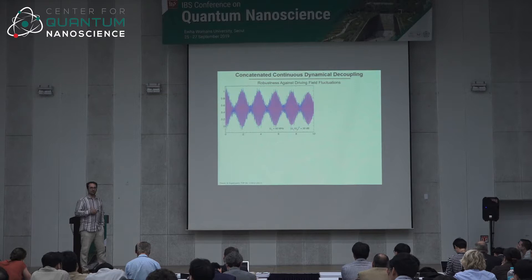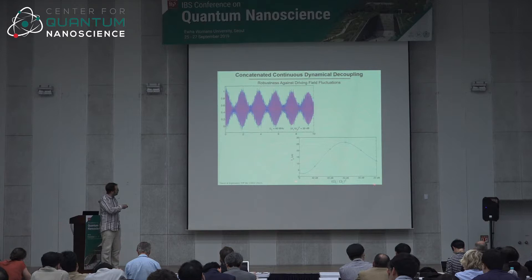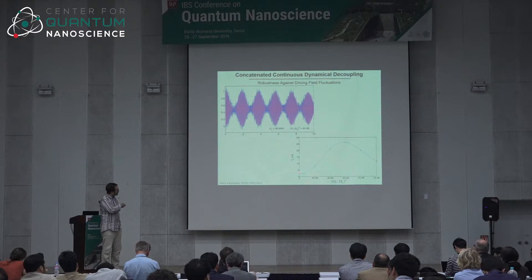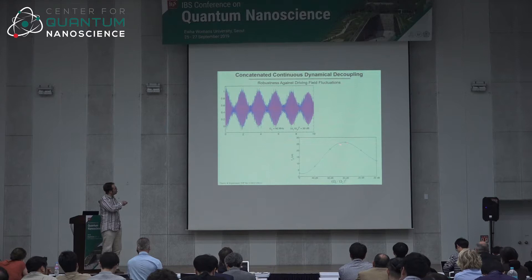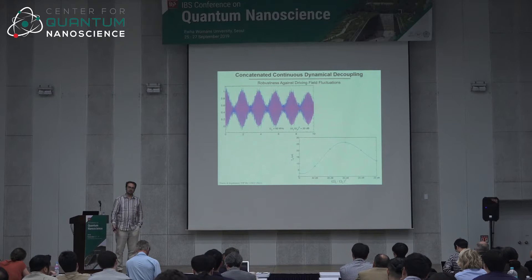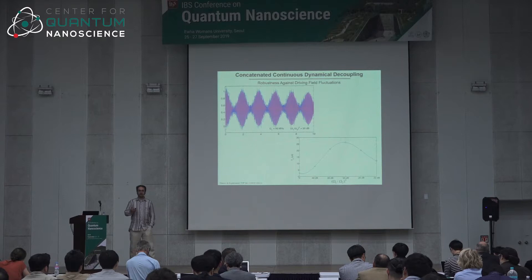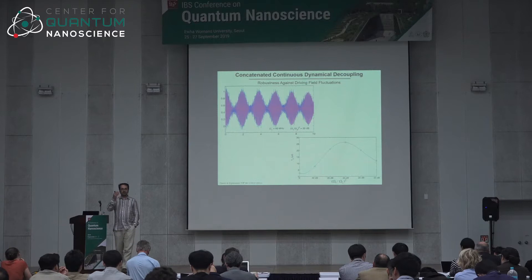If you analyze what this means for the coherence time in the system, you find the coherence time is increased by a factor of 10 — just by adding a very, very weak but well-chosen sideband to the driving field. When you have no extra sidebands you have two and a half microseconds, and you can bring this up to about 25 microseconds. This can be iterated: by putting more sidebands, you can gain more and more robustness from the same microwave source.